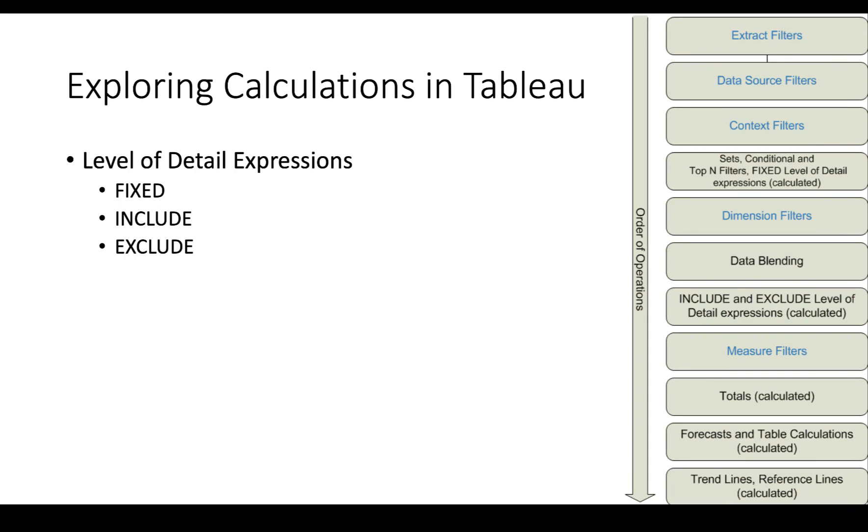So remember when we looked at the order of operations. Tableau has an order of operations and it affects when filters happen, but it also affects when level of detail expressions are calculated. If you'll notice here on the right side, we see that we have extract filters, then data source filters, then context filters. And then we have some other things, but one of the things that hits is the fixed level of detail. And then further down, we see include and exclude.